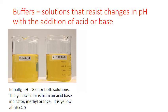Here are pictures of two solutions, which both have a pH of 8.0. The one on the right is a buffer, and the one on the left is not. The yellow color comes from an acid-base indicator, methyl orange. It's always yellow when it's in solutions that have a pH greater than 4.0, but below 4.0, the color will change to red.